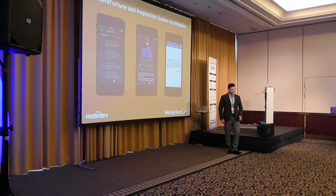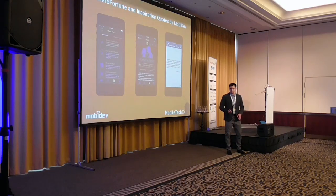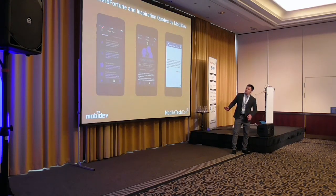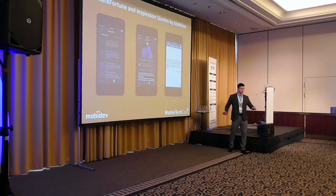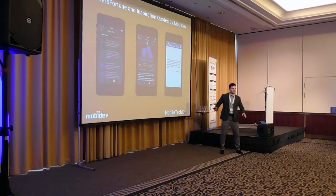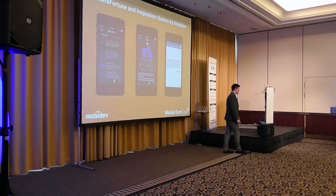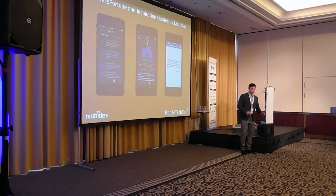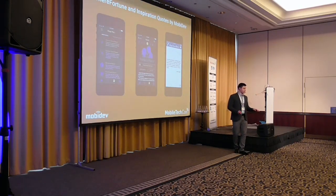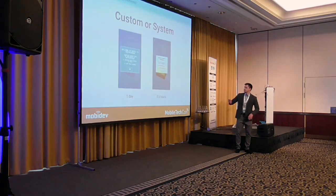However, designers are not developers and they can sometimes draw UI elements that are very similar to system ones but different in some parameters. For example, the navigation bar in iOS is 64 points, and in Retina it's 128 pixels, but a designer may draw it at just 17 points. In this case, the developer should discuss with the product owner whether it's necessary to reproduce the design very precisely or whether something can be changed to save time.